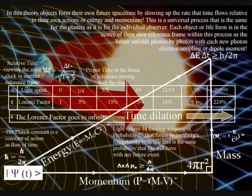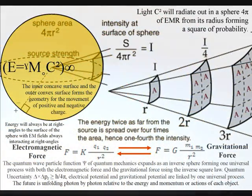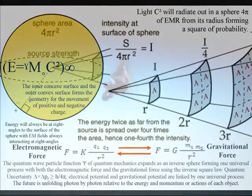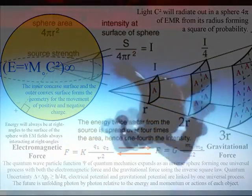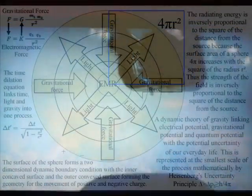This can be seen mathematically, with gravity and electromagnetism sharing the inverse square law, representing the geometry of this universal process, with gravitation being a secondary force to electromagnetism.